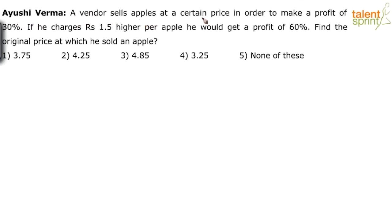A vendor sells apples at a certain price in order to make a profit of 30%. If he charges rupees 1.5 higher per apple, he would get a profit of 60%. Find the original price at which he sold an apple.